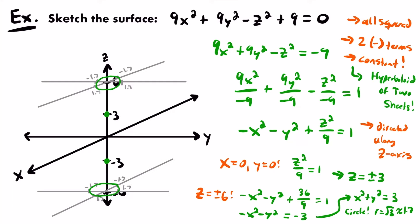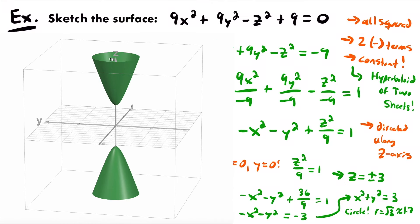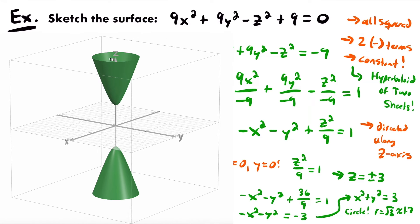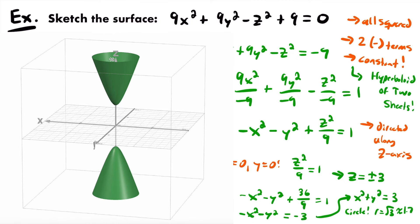Now draw two curves: one starts at z = 3, reaches up to the circle at z = 6 (first sheet), and the other starts at z = -3, reaching down to the circle at z = -6 (second sheet). After shading in, we have completed our sketch of this hyperboloid of 2 sheets. Here is a 3D render of what this surface looks like in 3D space — you can clearly see the two sheets formed by the equation.